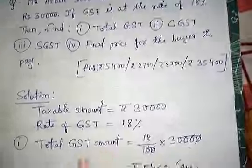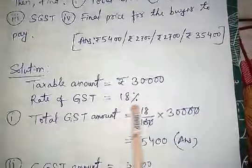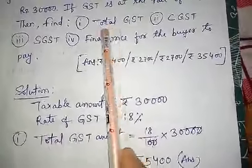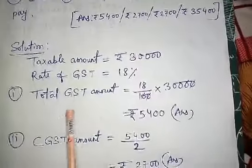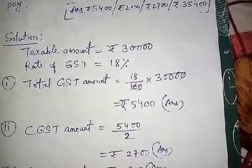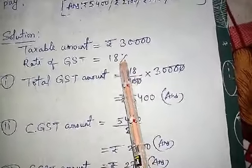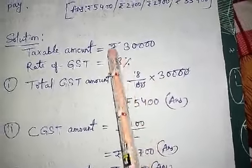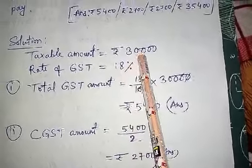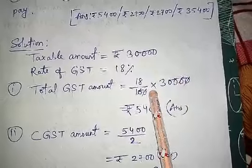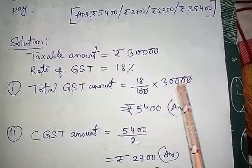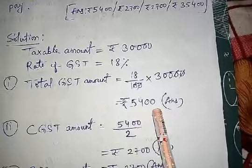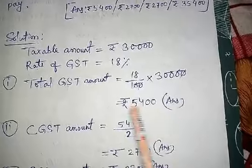Rate of GST is 18%, so total amount of GST will be 18/100 multiplied by the taxable amount of 30,000. We divide the GST percentage by 100 and apply it on 30,000. When we calculate, 5,400 is our total GST.